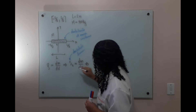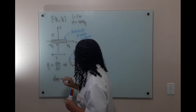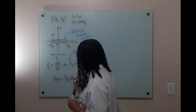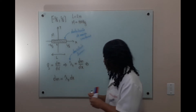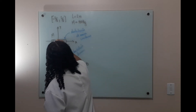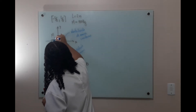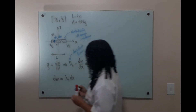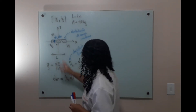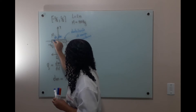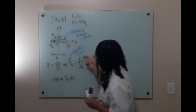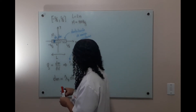Daqui, a gente tira que o elemento de massa é uma densidade linear constante multiplicada pelo elemento de posição. Esse aqui é um elemento de posição dx, que tem uma quantidade dm de massa. Como esses elementos são constantes, se eu pegar um elemento desse mesmo tamanho, ele vai ter a mesma relação de massa sobre comprimento. Então, a densidade é constante.